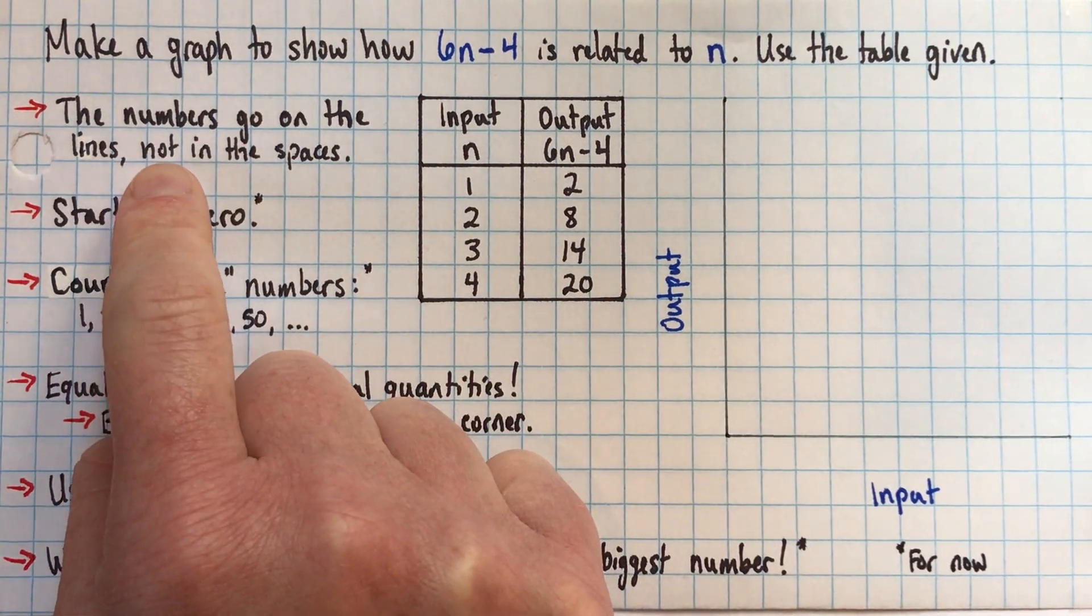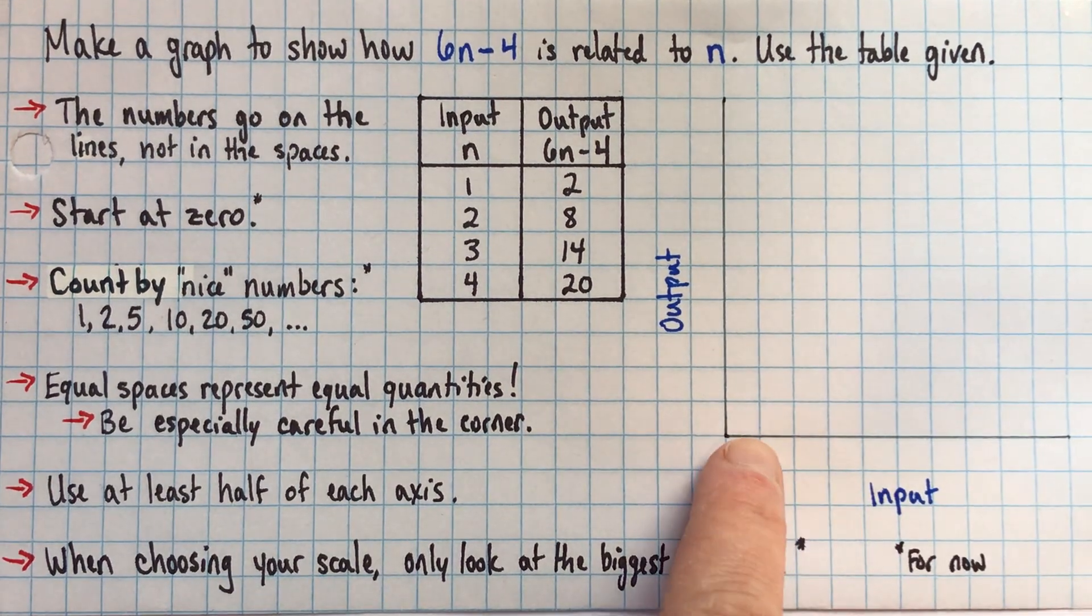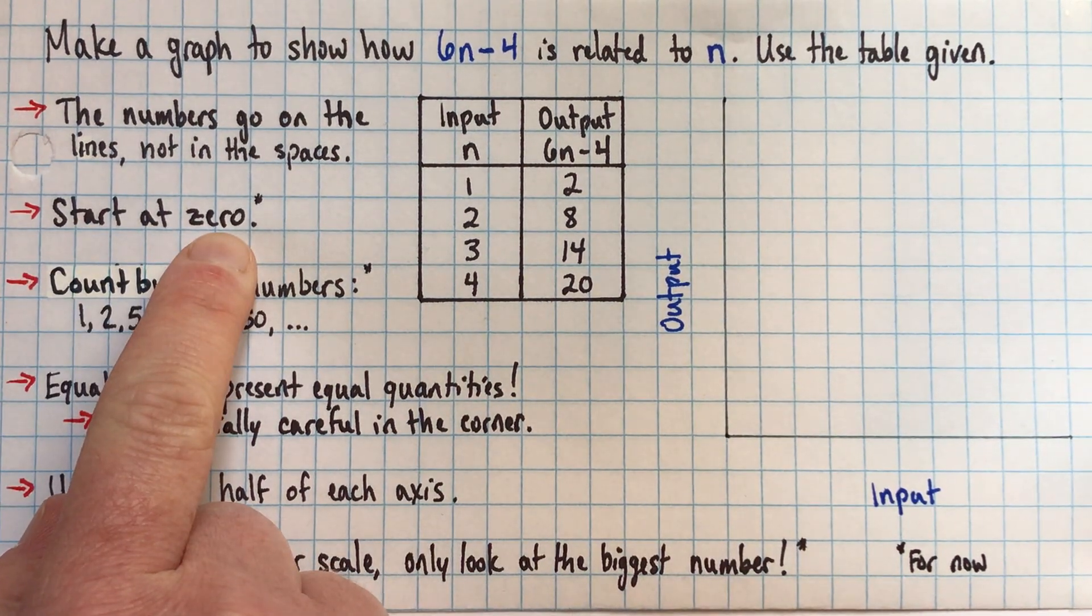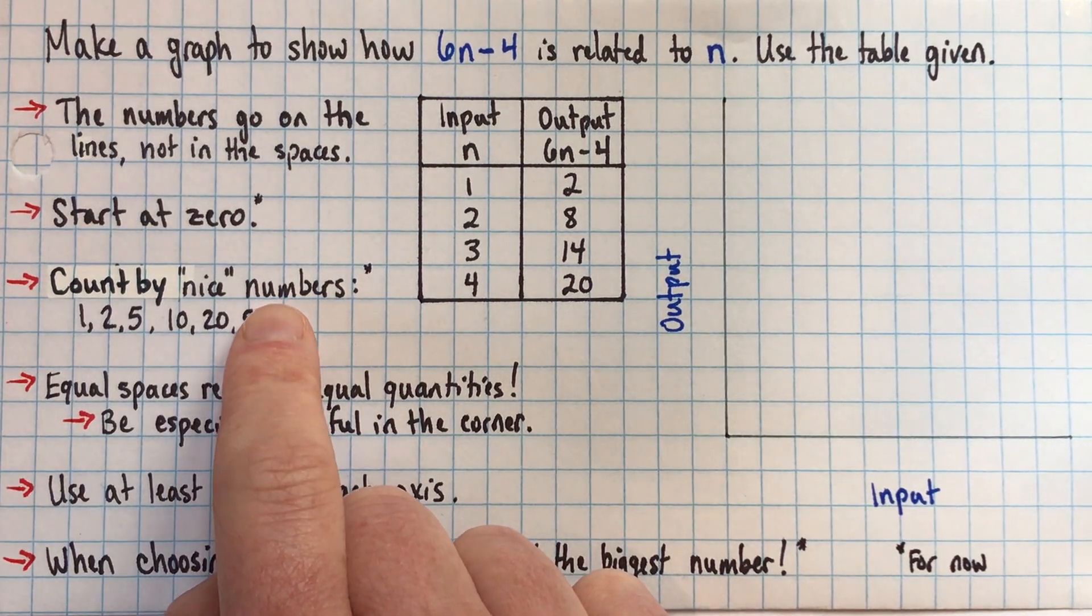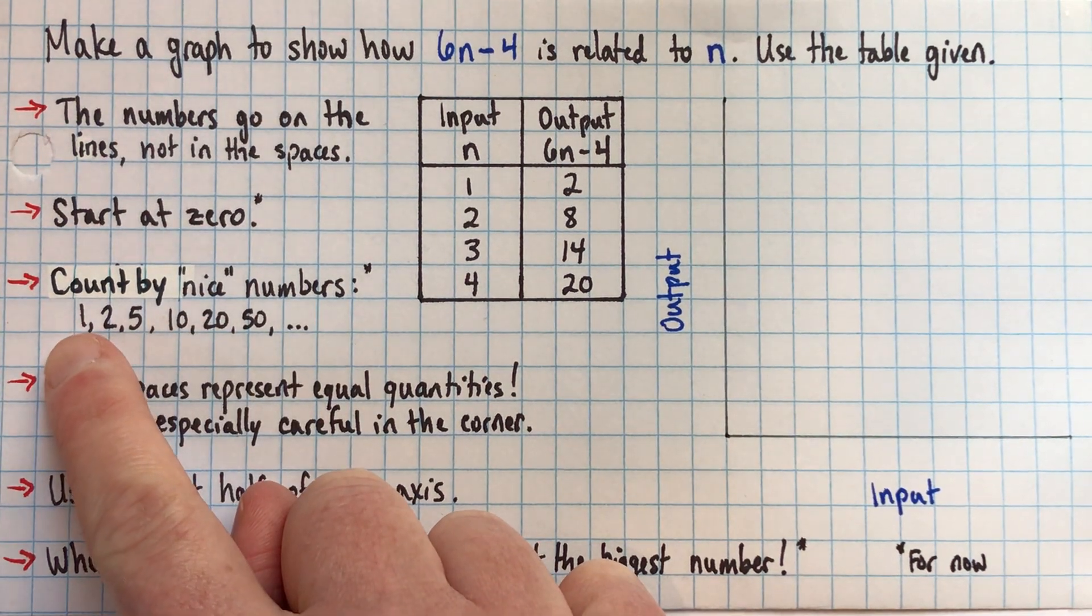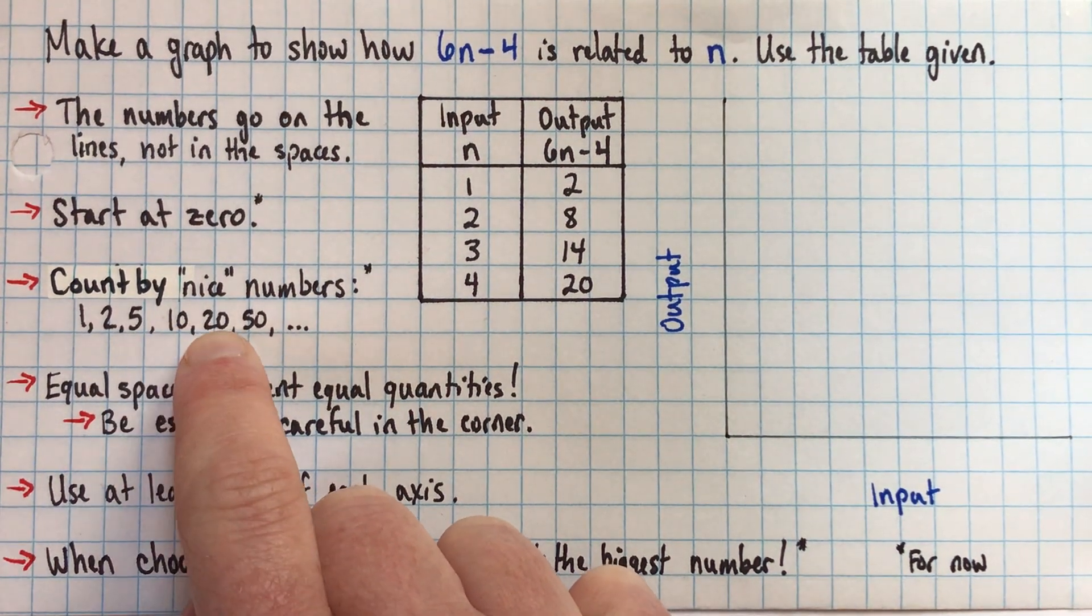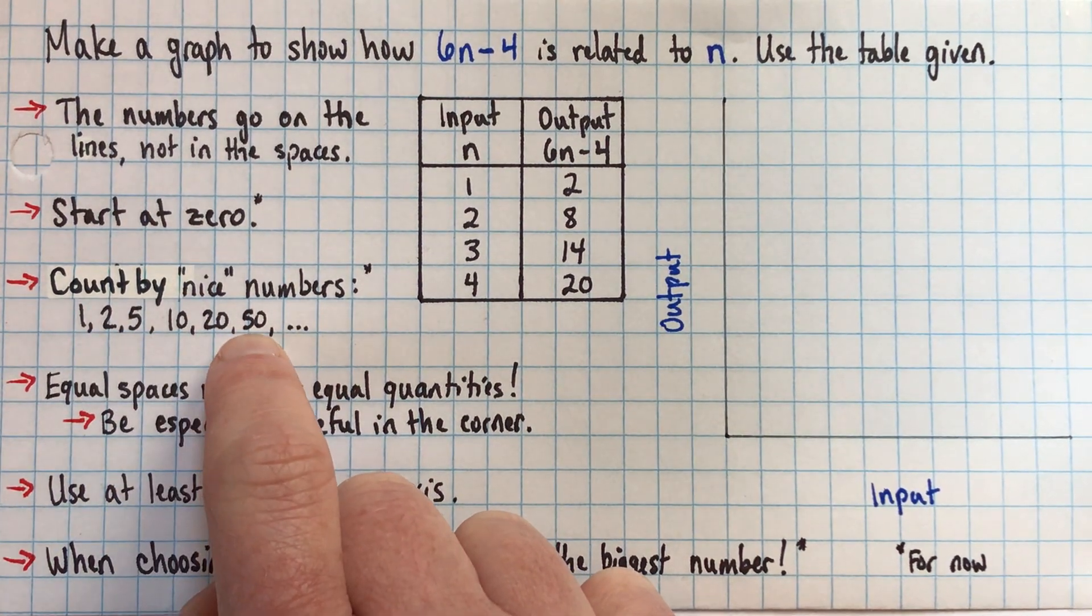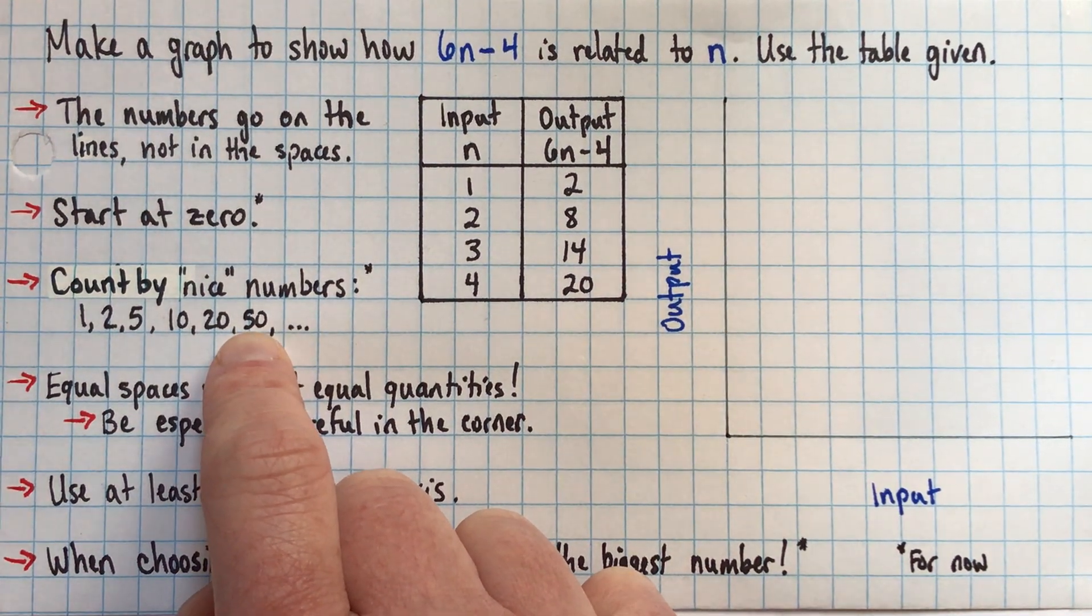The first rule is the numbers go on the lines, not in the spaces. There are different kinds of graphs, and in this kind of graph we're going to label the lines, not the spaces in between. The second rule is to start at zero. The third rule is to count by nice numbers, otherwise the graph is really hard to read. It's not exactly wrong, but it's really hard to read. So I tell my students they can count by 1, 2, or 5, or you can multiply any of those by 10, then count by 10, 20, 50, or 100, 200, 500. But nice numbers. Don't count by 3.5. Don't count by 7. It's really hard to read the graph if you do something like that.